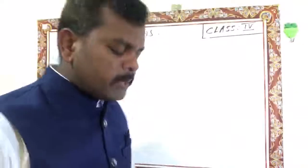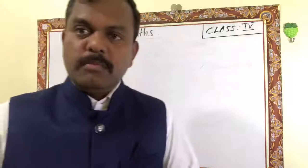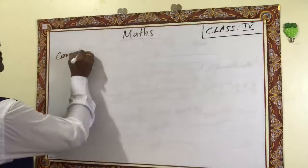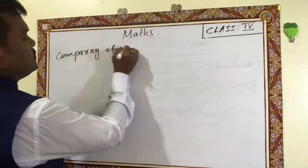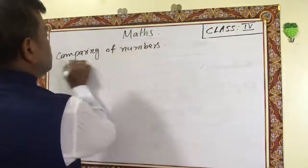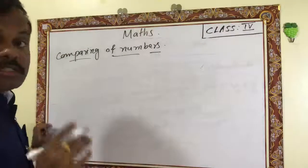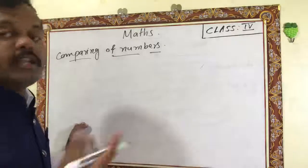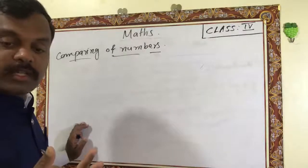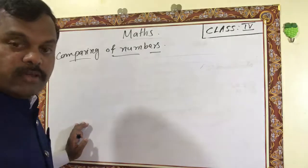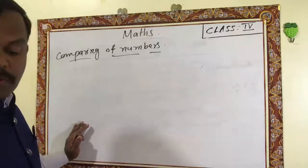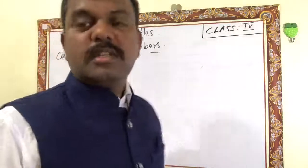Comparison of numbers: if it is a single-digit number it is very easy — six and nine, nine is greater. Two-digit numbers are also easy — 65 and 45, 65 is greater. Three-digit and four-digit numbers are similarly easy. But in this lesson we have very large numbers, so let me give an example.